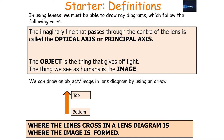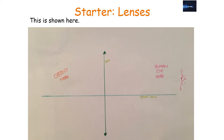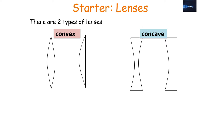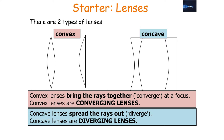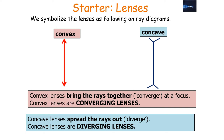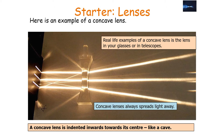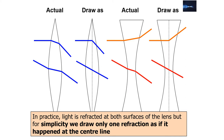The object gives off light whilst the image is what we see as humans. Where the lines cross in a lens diagram is where your image forms. There are two types of lenses: convex lenses, which bring rays together at a focus (converging lenses), and concave lenses, which spread rays out (diverging lenses). To simplify, we draw only one refraction as if it happened at the central line of the lens.